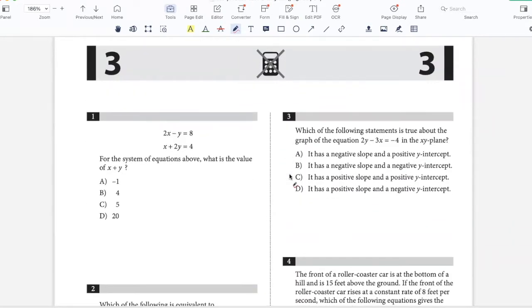Question one, for the system of equations above, what is the value of x plus y? We have 2x minus y equals 8 and x plus 2y equals 4. I can find y first by multiplying this equation by 2, so I'll get 2x plus 4y equals 8. Then I can subtract this equation from this one.